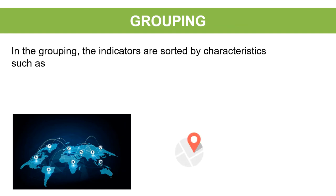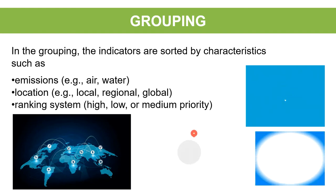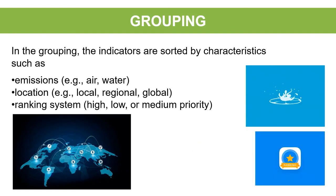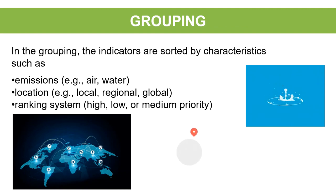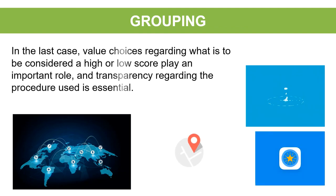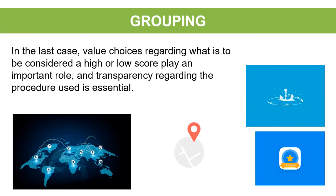Grouping: indicators are sorted by characteristics such as emissions by medium (air, water) or location (local, regional, global), or by a ranking system of high, low, or medium priority. In the latter case, value choices regarding what constitutes a high or low score play an important role, and transparency regarding the procedure used is essential.